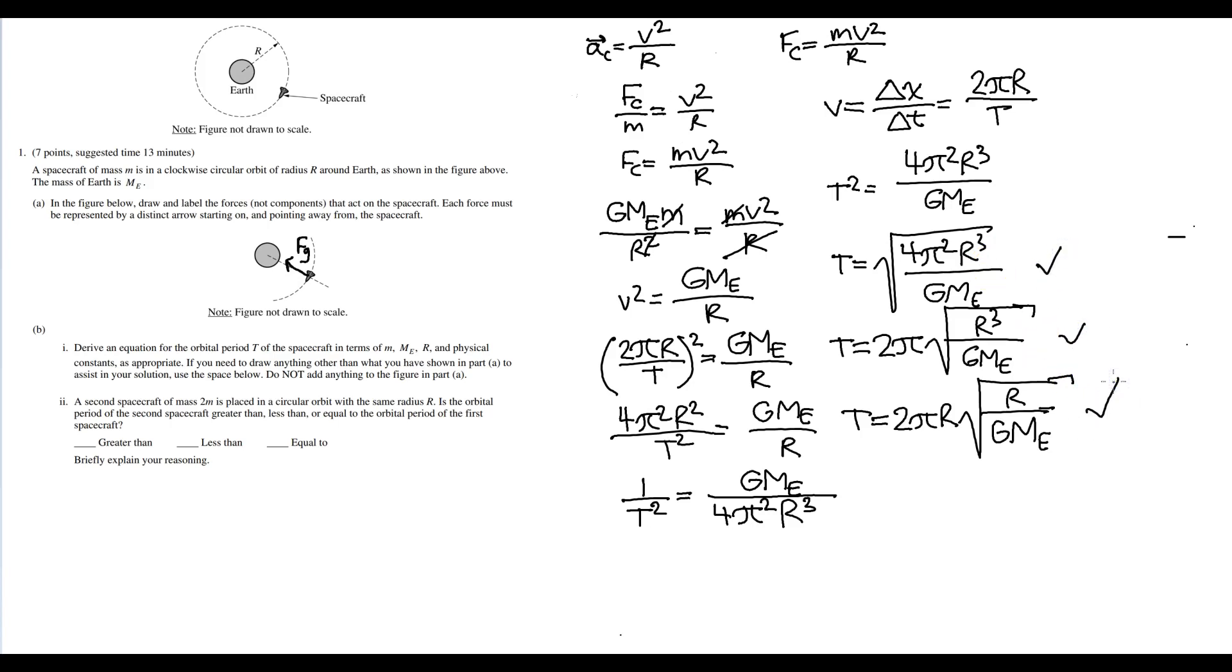All right, so part B, part 2. A second spacecraft of mass 2M is placed in a circular orbit with the same radius R. Is the orbital period of the second spacecraft greater than, less than, or equal to the orbital period of the first spacecraft? Now, it is actually equal to the orbital period of the spacecraft.